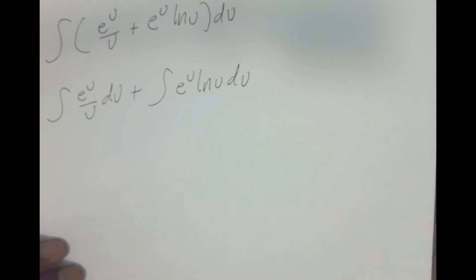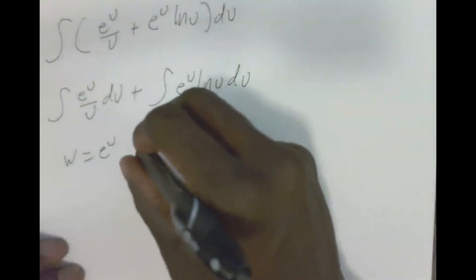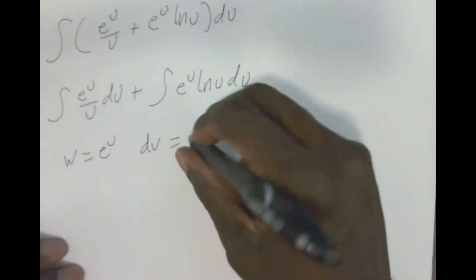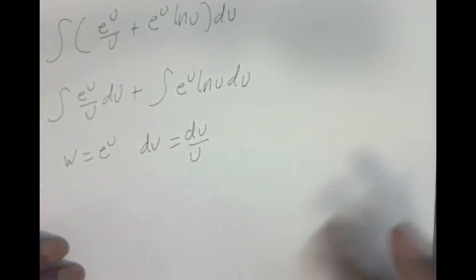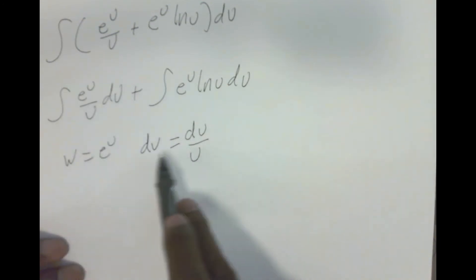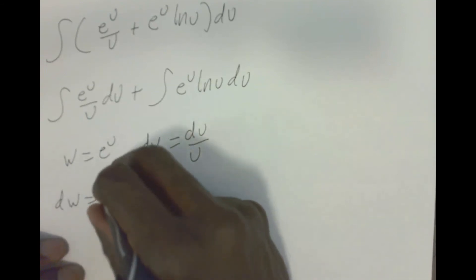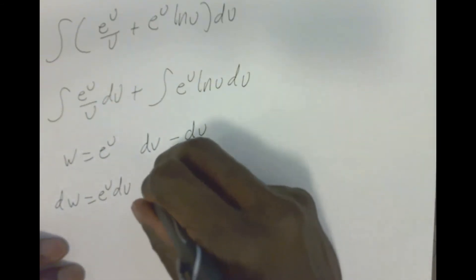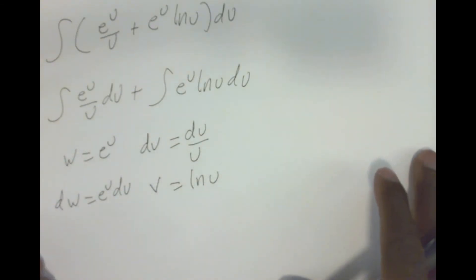For integration by parts, I'm going to let W = e^U and DV = DU over U, so DW = e^U · DU and V = ln U.